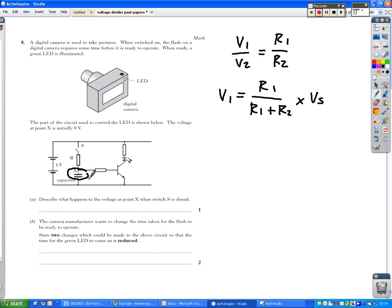So the part of the circuit used to control the LED is shown below. The voltage at point X is initially zero, so that's like it was in the homework there. Before you let electricity flow through a circuit, then the capacitor is at zero volts.